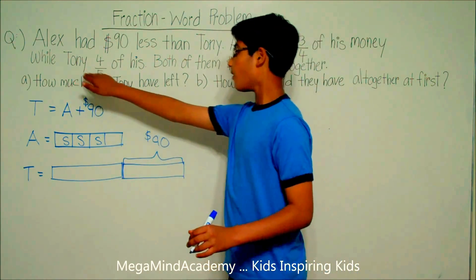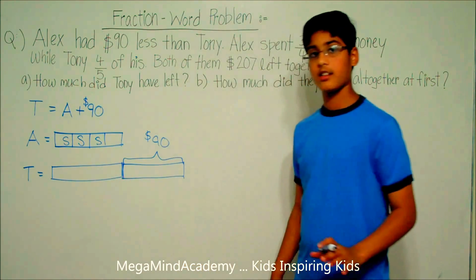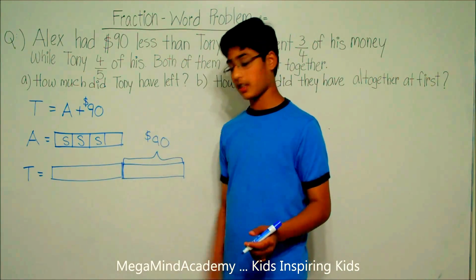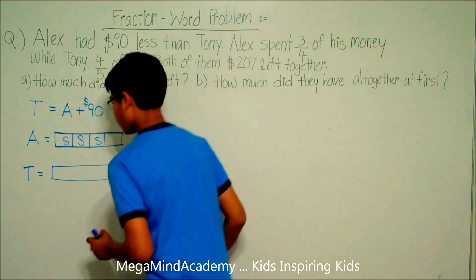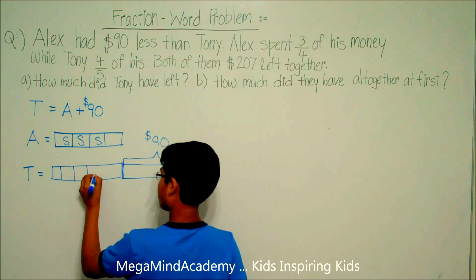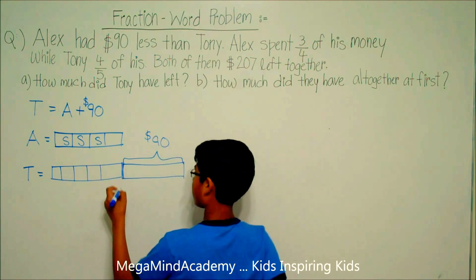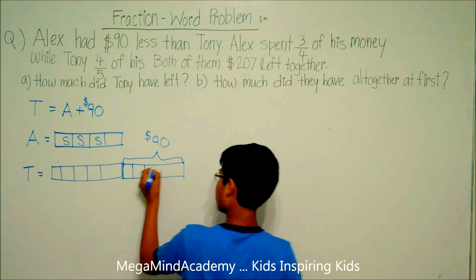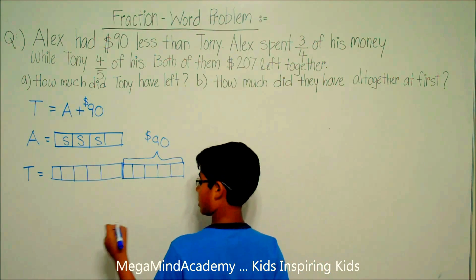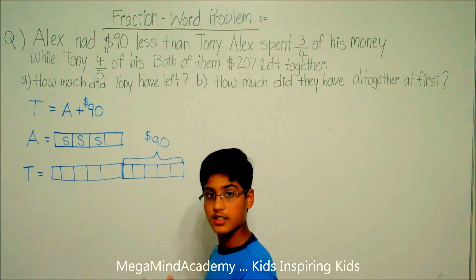Now we know that Tony spent four-fifths of his money, so he divided up his money into five units. Let's divide up each of these sections of his money into five units: one unit, two units, three units, four units, and five units — for both sections.